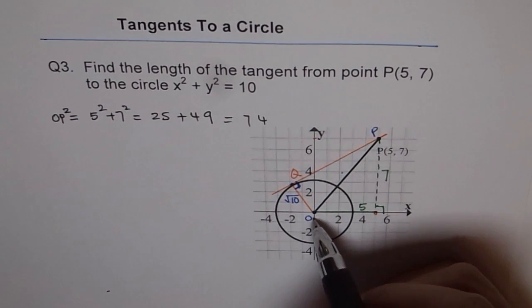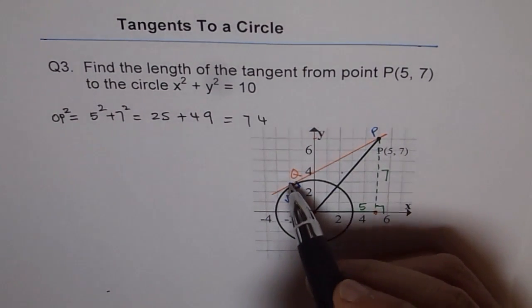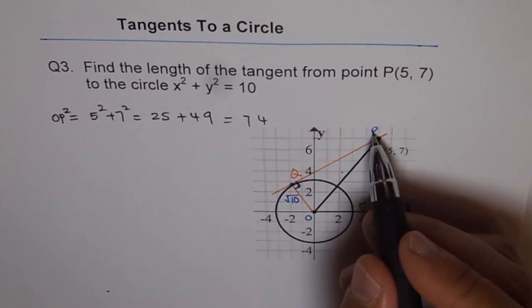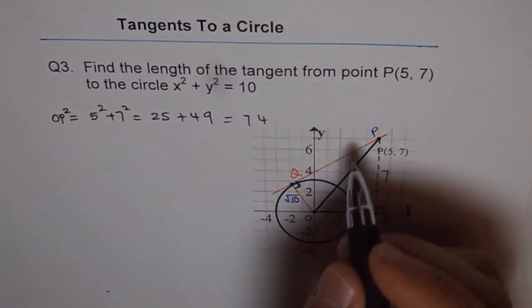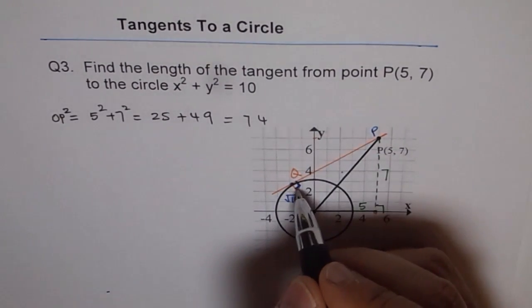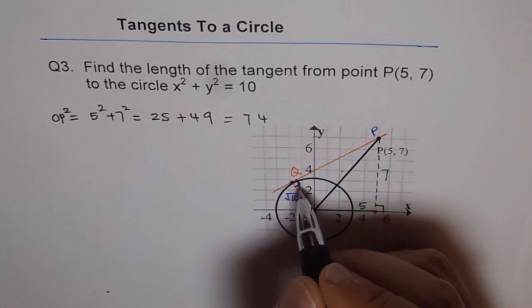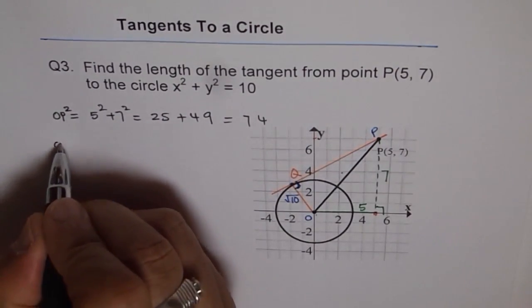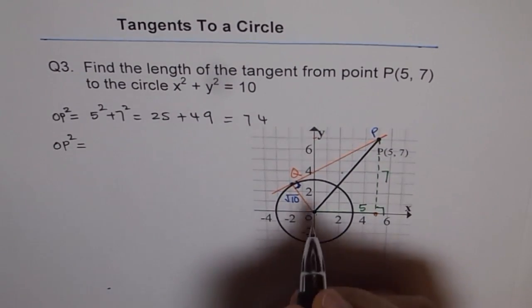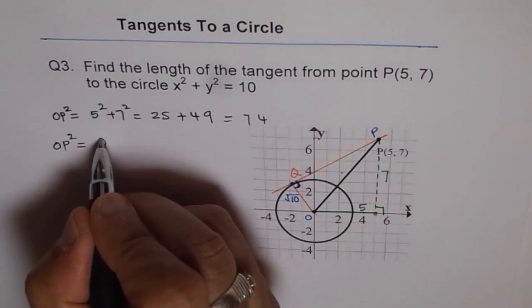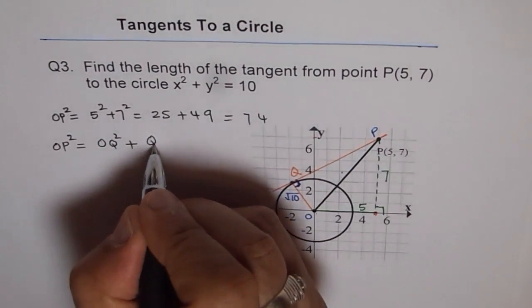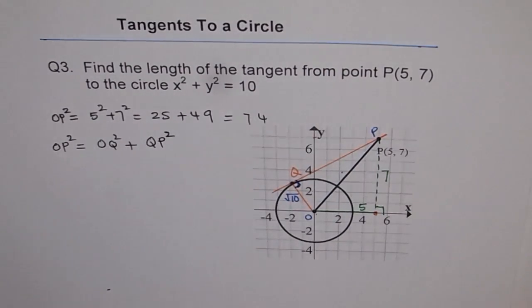Now we know OP squared and we also know square of OQ. Square of OQ is 10. So we can find QP. Now, in this right triangle, that is 90 degrees. Therefore, the hypotenuse is OP. So therefore, OP squared is also equals to OQ squared plus QP squared.